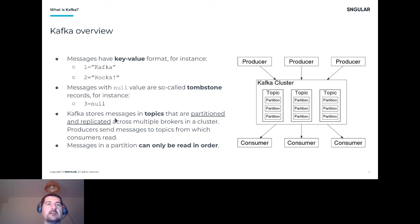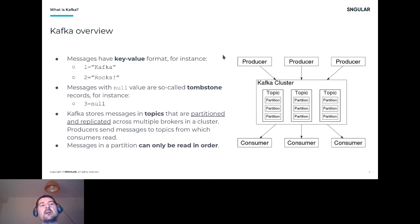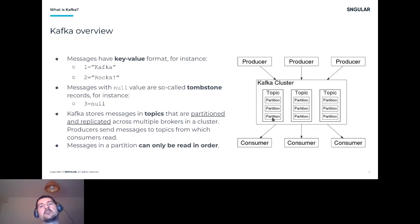Producers are the ones that send messages to the cluster in Kafka, and then we have consumers that read the data from Kafka. One very important guarantee from Kafka is that we can only read data in order — this is per partition, as we will see. Consumers can only read data in the order it was written to a given partition.